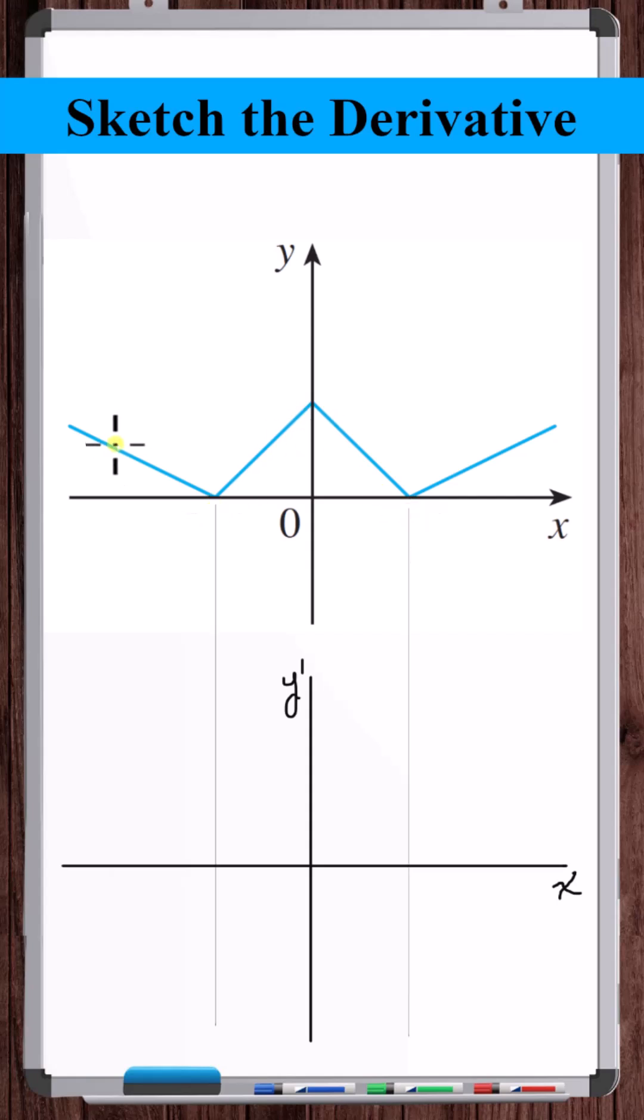The derivative graph is going to jump from this slope to this slope, from this slope to this slope. But if you notice all around the kinks, the graph here is just lines.